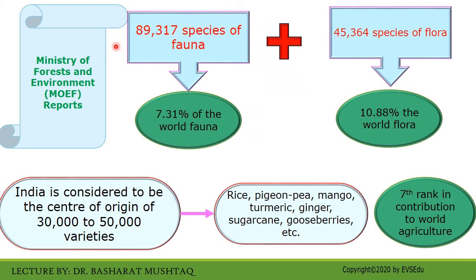Based on the survey report of the Ministry of Forestry and Environment — MOEF, now known as the Ministry of Forestry, Environment and Climate Change — India has a large number of different species. At present, 89,370 species of fauna and 45,364 species of flora have been recorded. These fauna species represent about 7.31 percent of the world's animal species, and in the case of plants, they represent 10.88 percent of the world's flora. In plants, species richness is high in angiosperms, bryophytes, pteridophytes, and in the family Orchidaceae.